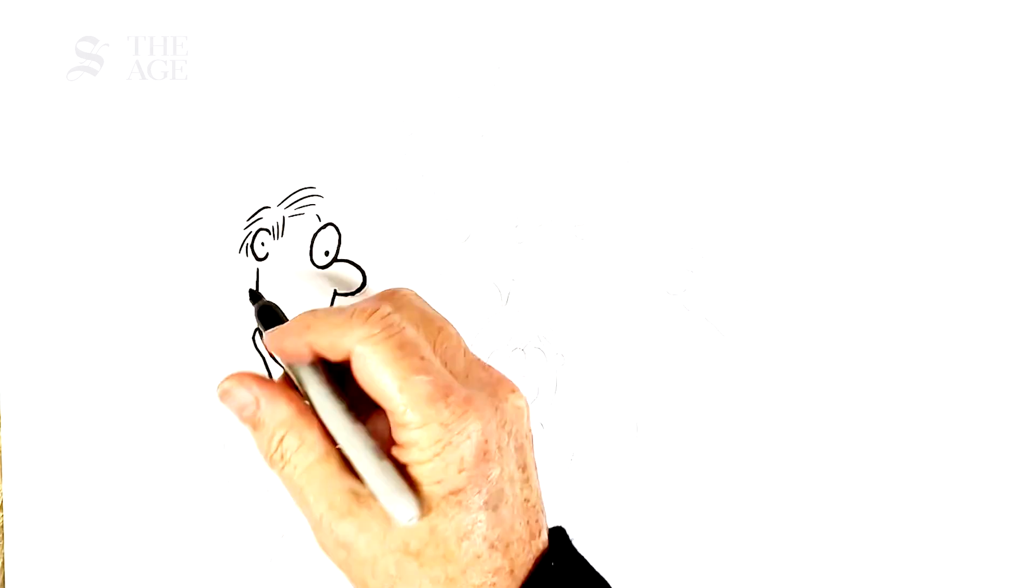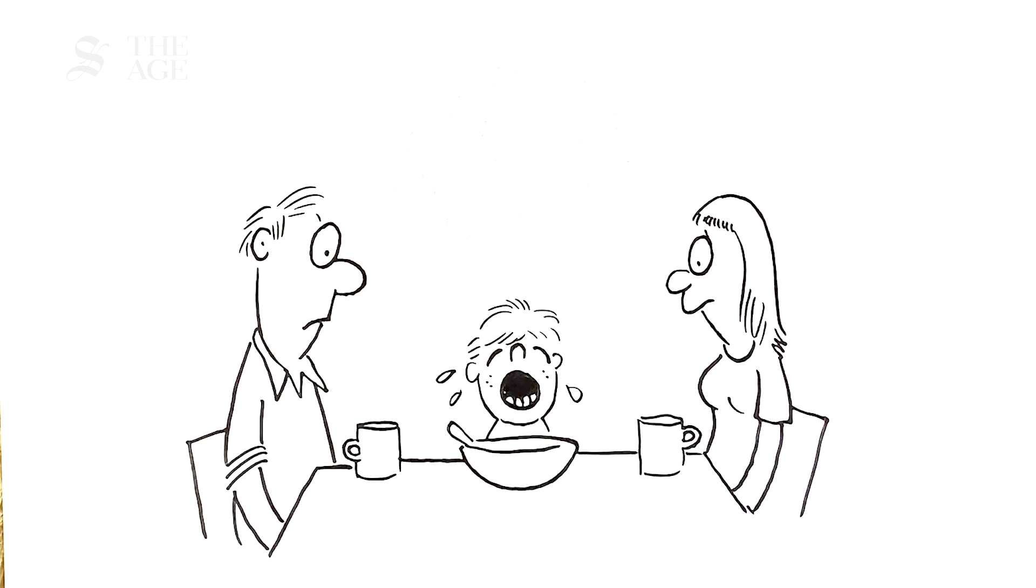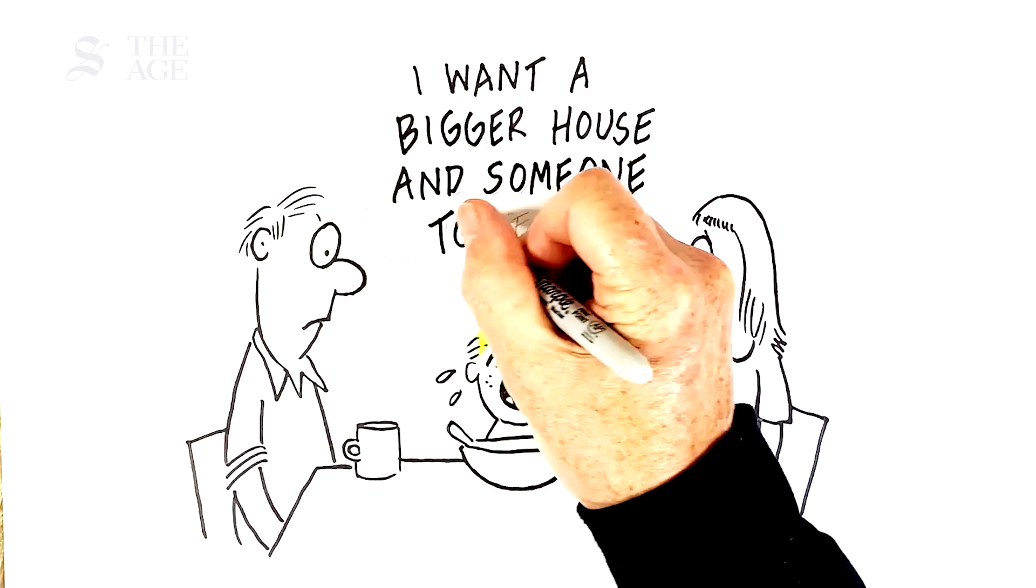It's not just the first child. The cost of a bigger house for a second or third child means there's likely to be fewer brothers and sisters for the eldest child to tease.